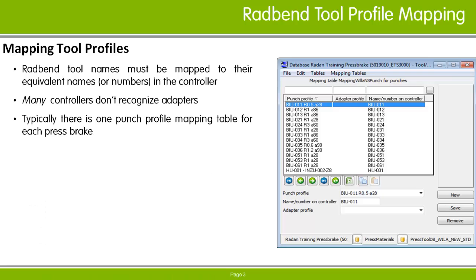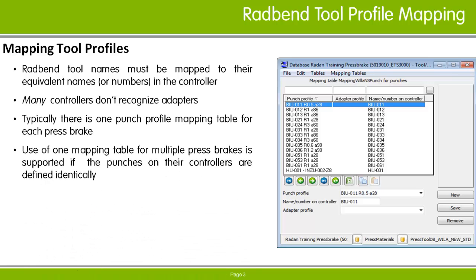Usually there is one punch or die profile mapping table for each Pressbrake, but you can use one mapping table for multiple Pressbrakes if the punches and dies on their controllers are defined identically — that is, they must have the same tool number and tool properties on all machines.